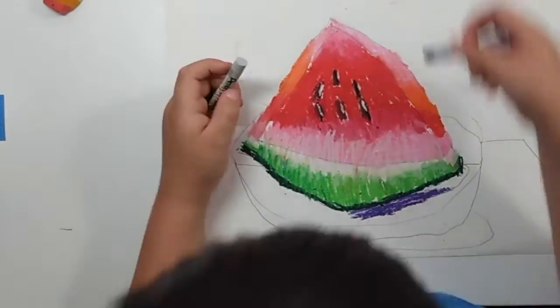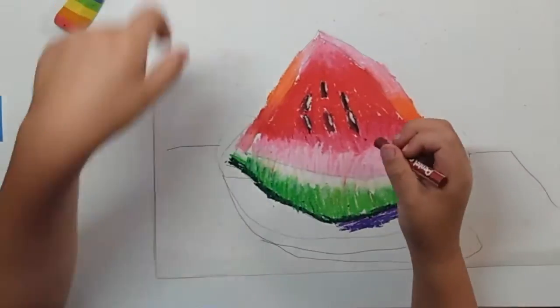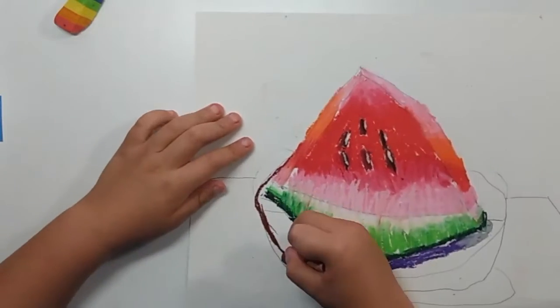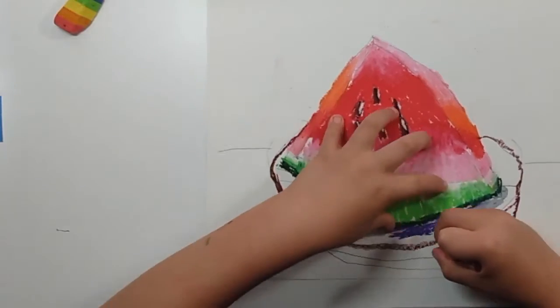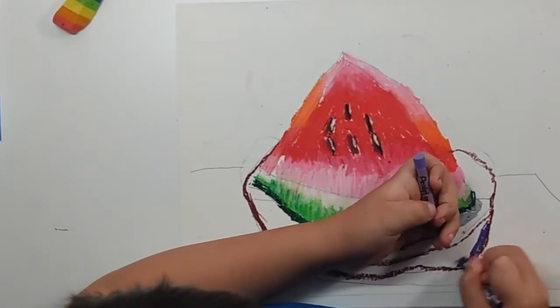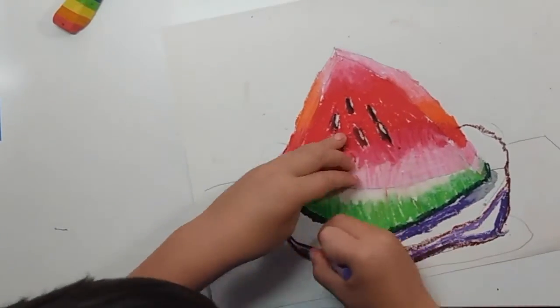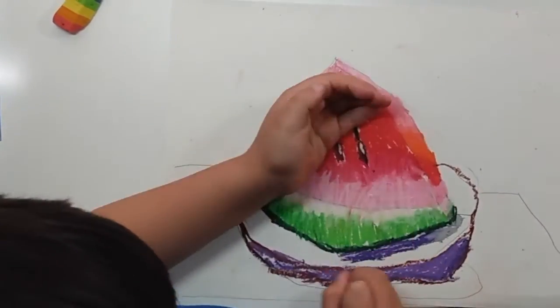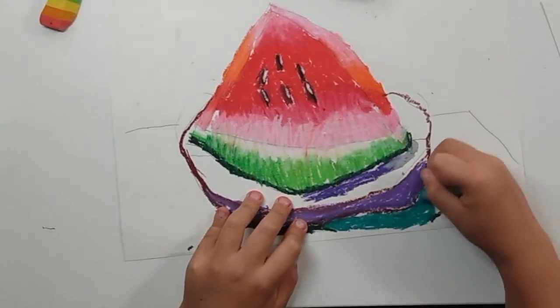Now he's using a dark purple to color in the shadows, and a brown oil pastel to outline his plate. He uses teal for the plate's shadow.